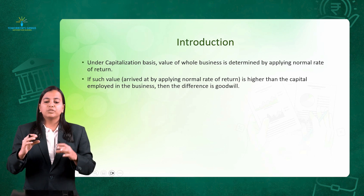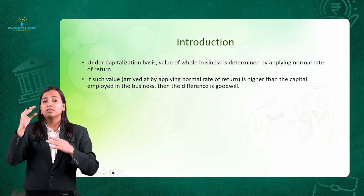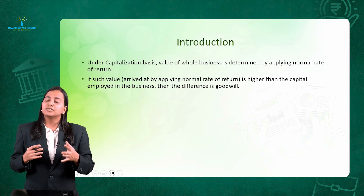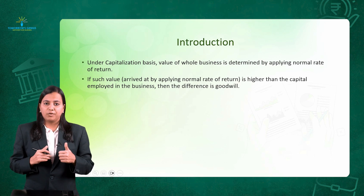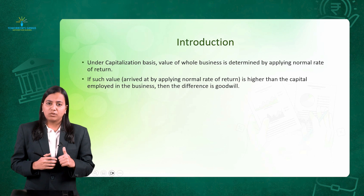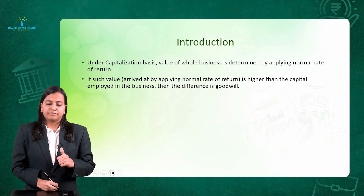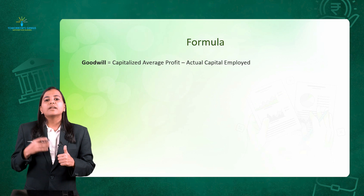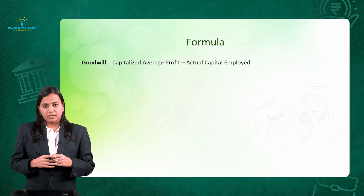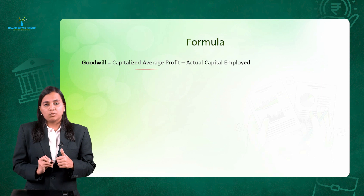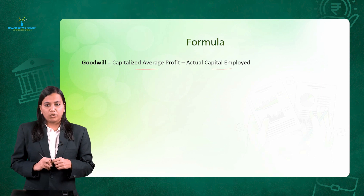If such value — which I am arriving at — is higher than the money I have invested, that is the capital employed, it results in Goodwill. Let's go ahead with the formula for calculation under this method. The formula to calculate Goodwill as per the Average Profit Method (Capitalization) is: Capitalized Average Profit minus the Actual Capital Employed.